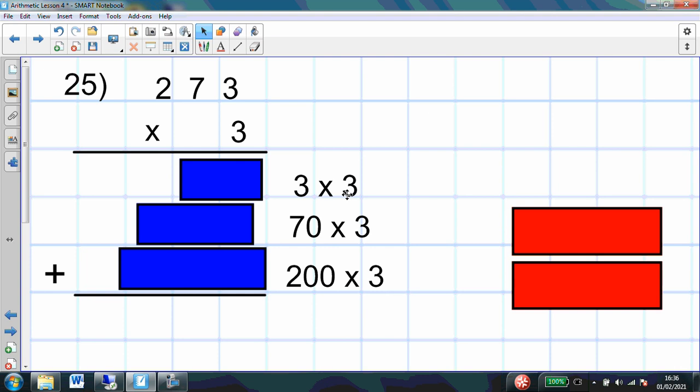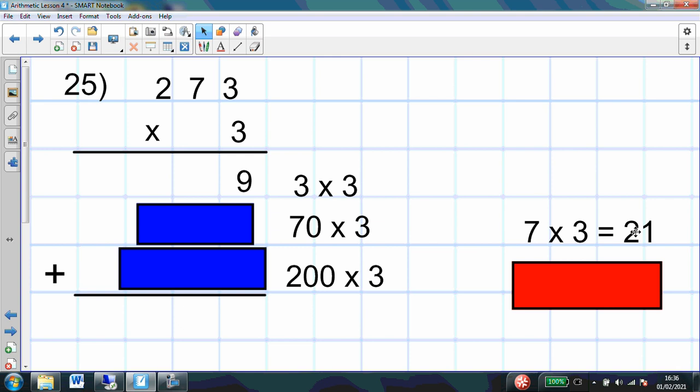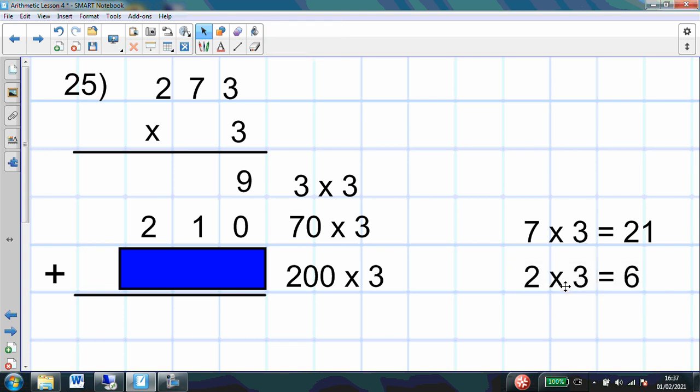Now, 3 times 3. 3, 6, 9. 3 times 3 is 9. 70 times 3. I know that 7 times 3 is 21. So, 7 tens times 3 would be 21 tens. So, I know it's 210. And then, 200 times 3. Well, I know that 2 times 3 is 6. And then I've got to think about my 100, haven't I? So, 200 times 3 must be 600.